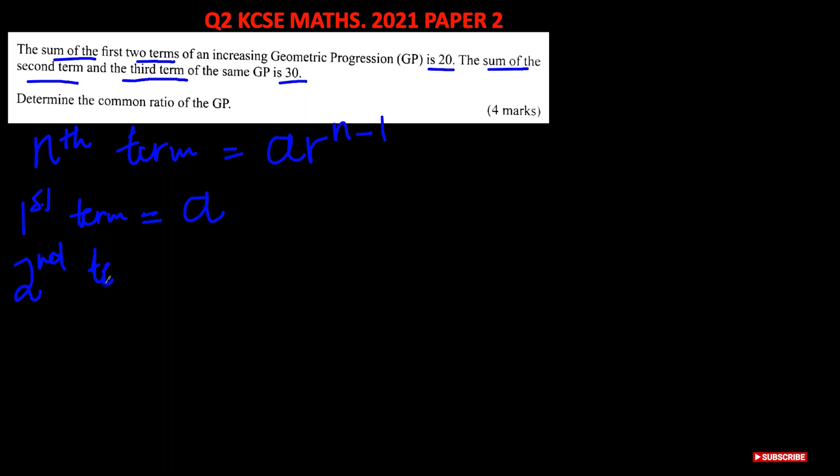So 2 minus 1 is 1, we're going to have a times r to the power 1, which is just ar. And now for our third term, n is equal to 3.